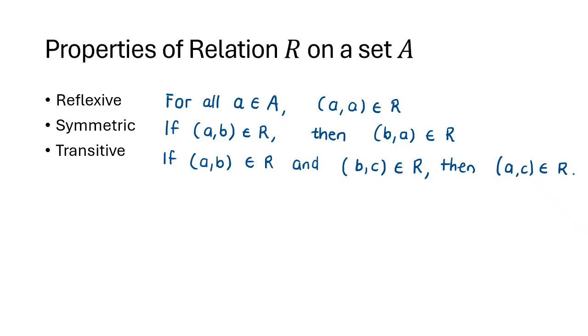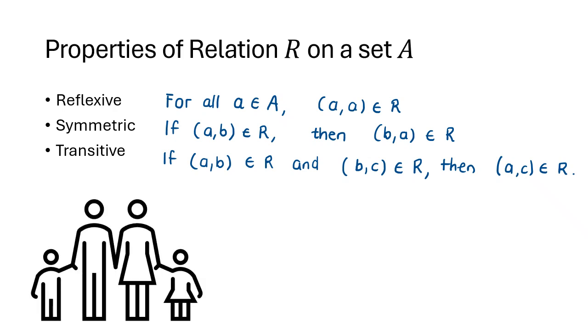One of the easiest ways to visualize these three properties is to think of a family or being related to each other in a family. For reflexivity, it says that anybody that we look at they have to be a relative of themselves - they have to be in the same family, and that's true. For symmetry, it says if I am related to you, you must be related to me, which also makes perfect sense. For transitivity, if person a is related to person b and person b is related to person c, then obviously person a must be related to person c.